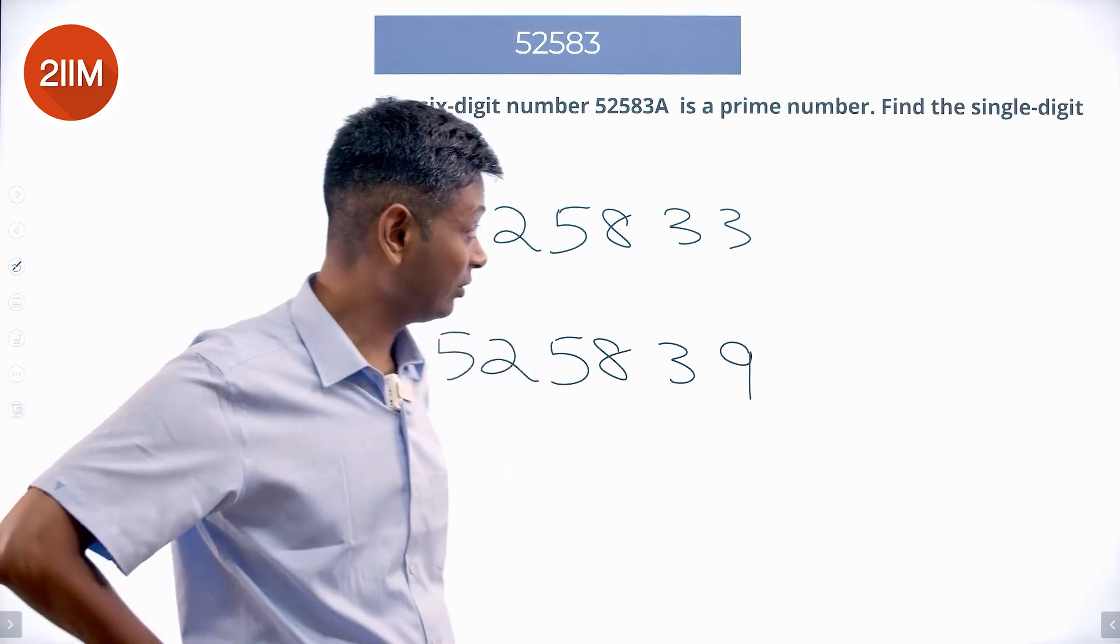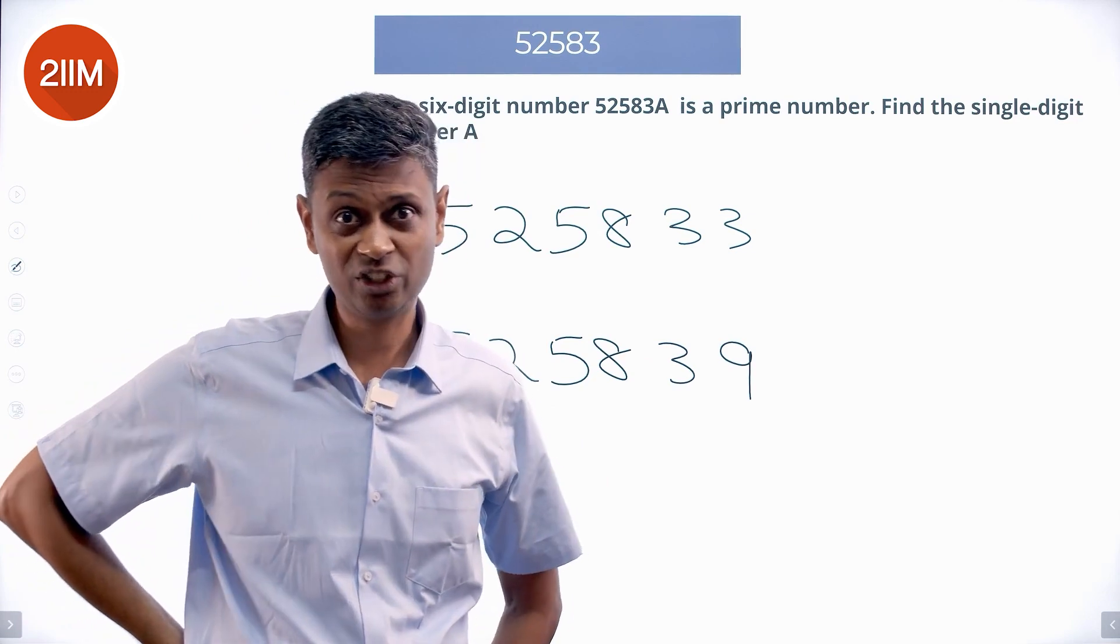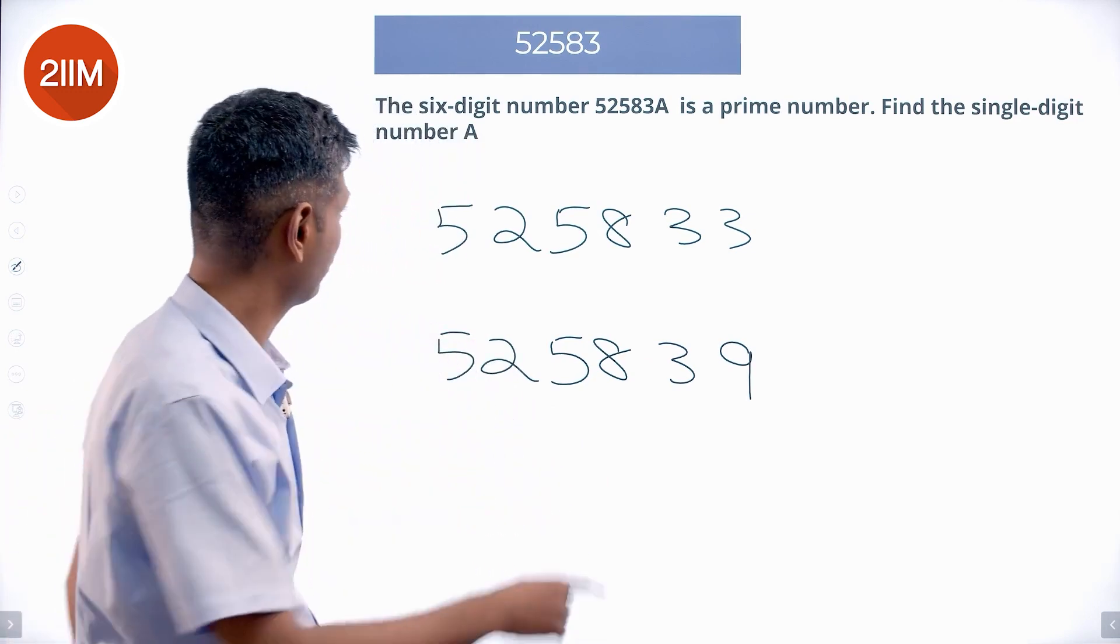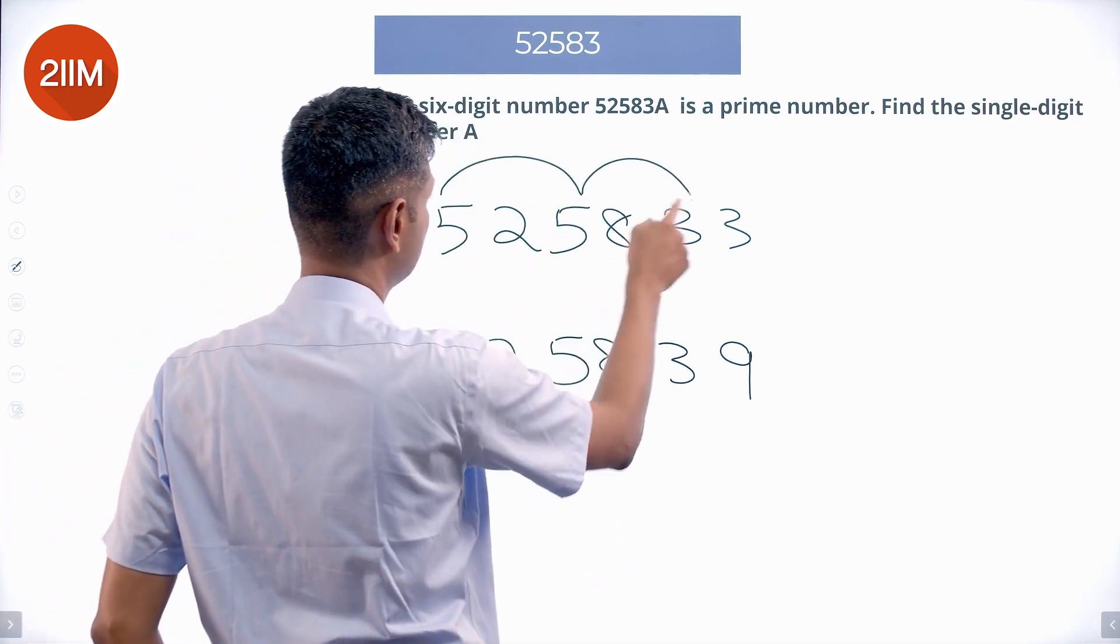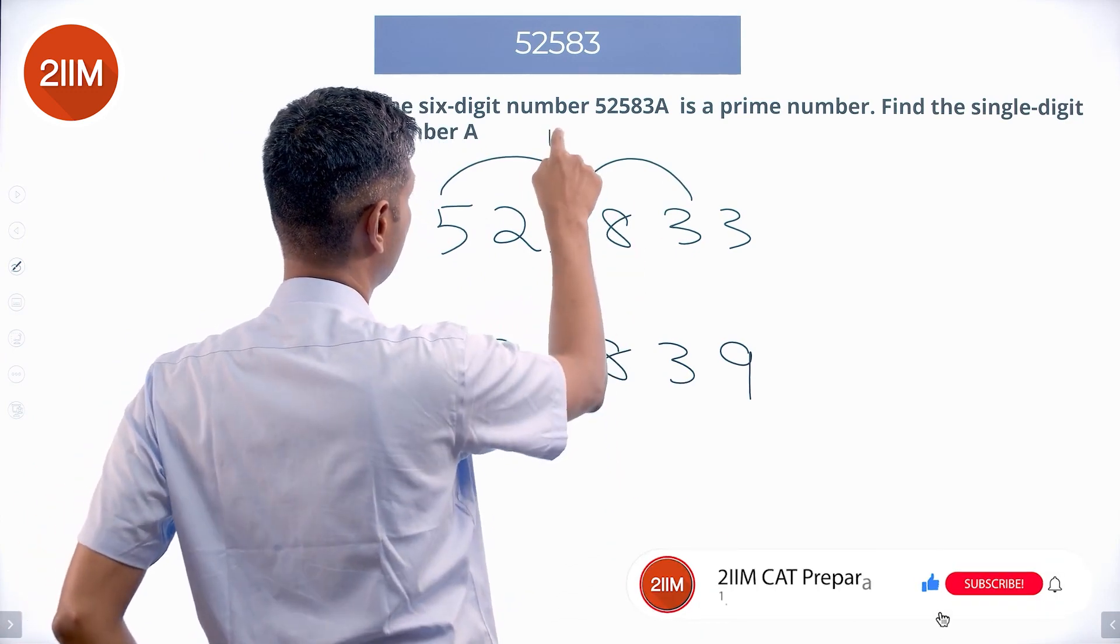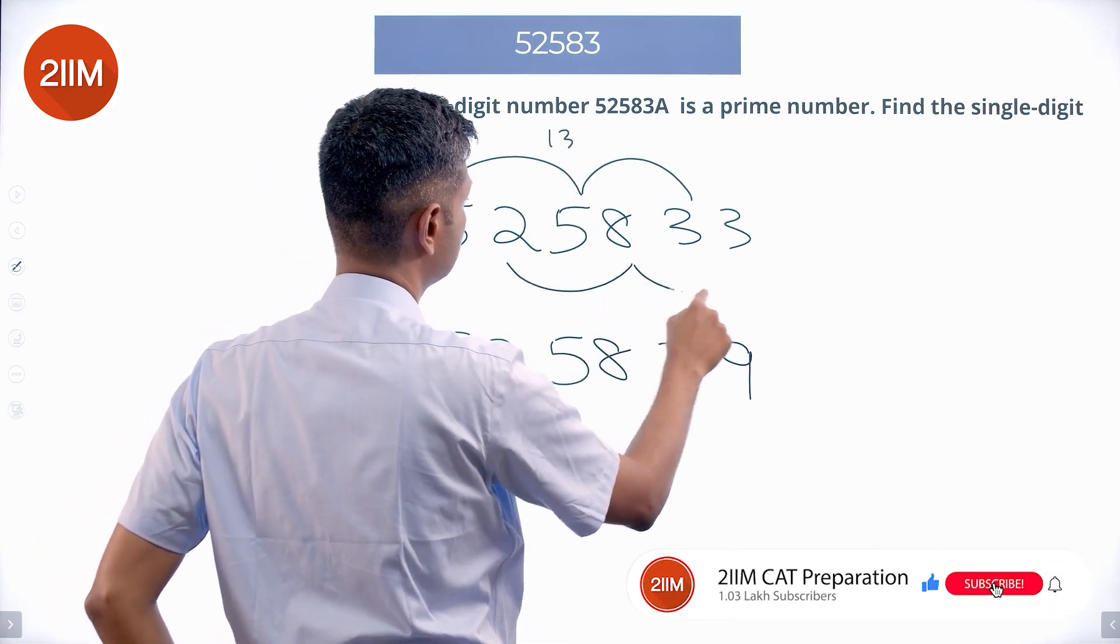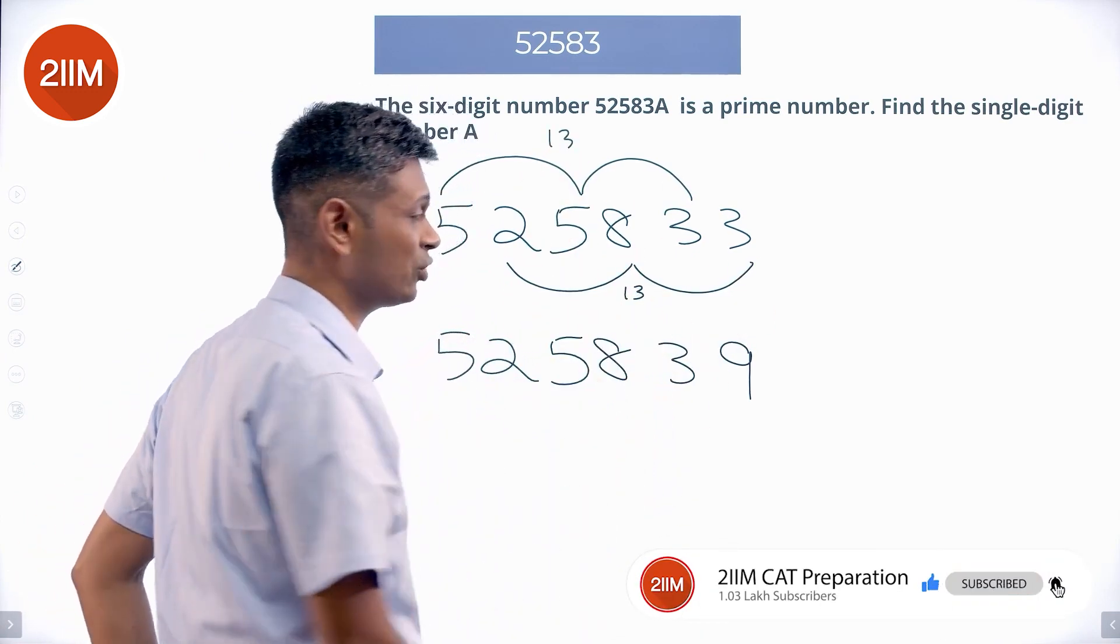7 is tricky. 11 test of divisibility is easy, so let's try with 11. 5+5+3=13. 2+8+3—you know the test of divisibility by 11: find even position digits, odd position digits, and subtract.